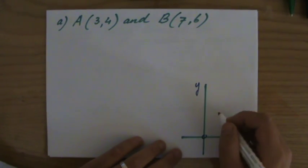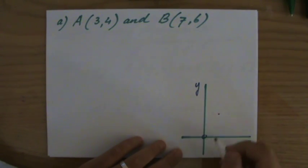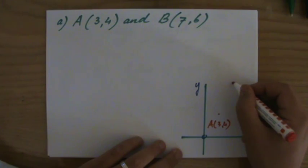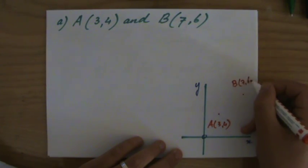I'm quickly going to sketch it to show you what is going on. A at (3,4), so let's put that here. Point A is at (3,4) and B is at (7,6). Alright, roughly there. B at (7,6).